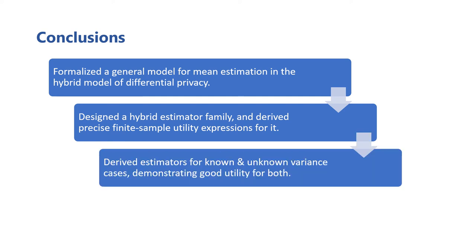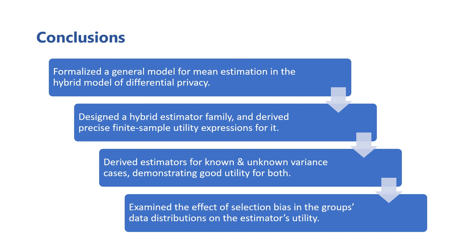Then, from this hybrid estimator family, we derived estimators for both the known and unknown variance cases, demonstrated that they achieved good utility, and examined how selection bias in the user's self-partitioning process can affect their results. Overall, for the problem of mean estimation, this shows that even with solutions as simple as a weighted combination of the classic models' estimates, the hybrid model can achieve significant and provable practical improvements.